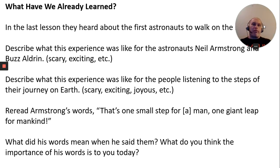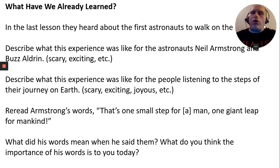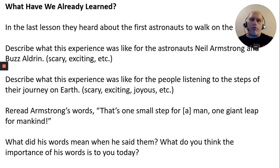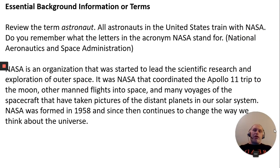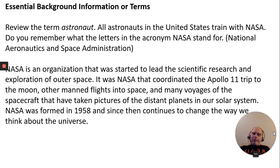So what have we already learned? We learned about the first astronauts to walk on the moon. We talked about Neil Armstrong and Buzz Aldrin, how exciting their adventures were, and talking about the experience of traveling through space. The word astronaut — all astronauts in the United States train with NASA, the National Aeronautics and Space Administration, an organization started to lead scientific research and exploration of outer space.